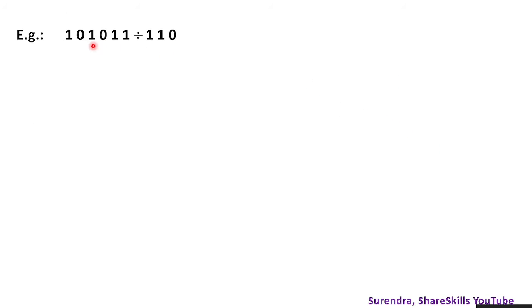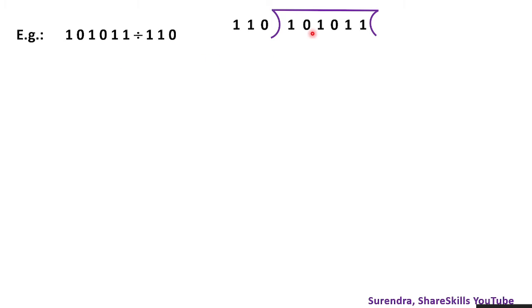Let me give you a more complicated example: 101011 divided by 110. We set up the division with 110 as the divisor. Looking at the first three digits of the dividend, if those digits are less than the divisor, we cannot divide, so the partial quotient digit is 0.